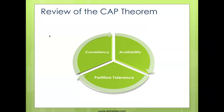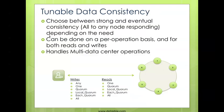Cassandra is known for having very strong availability and partition tolerance, and because of that, some say Cassandra does not have strong data consistency. That's just not true. Cassandra offers what's called tunable data consistency, which means you get to choose how strong you want your data consistency to be. This is done on a per-operation basis — not a global setting. You can choose per operation, per insert, per select, how strong you want your data consistency to be.